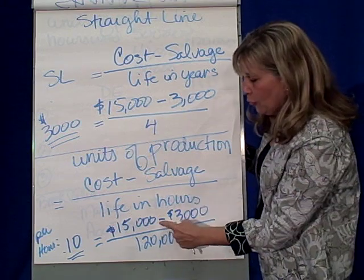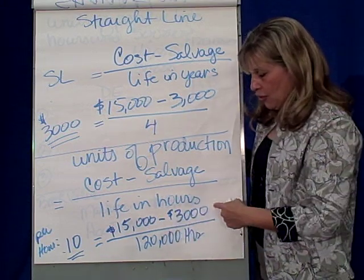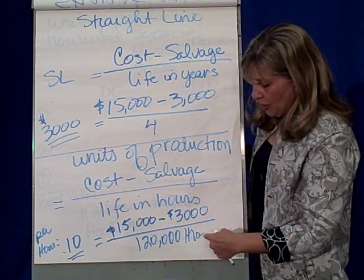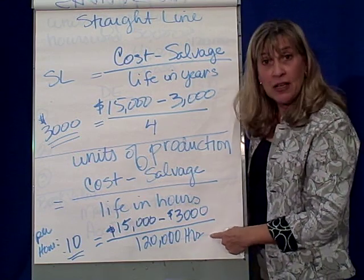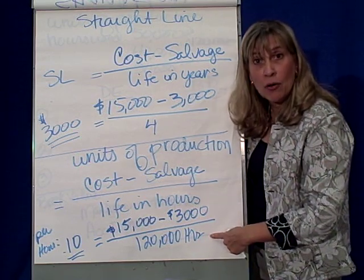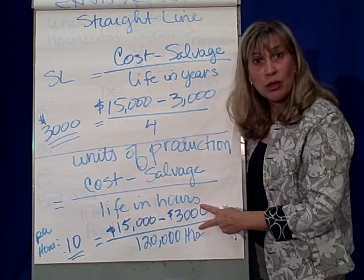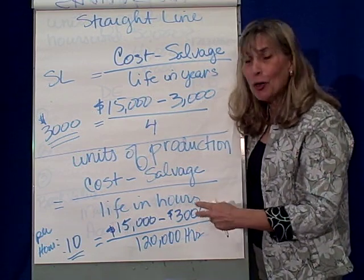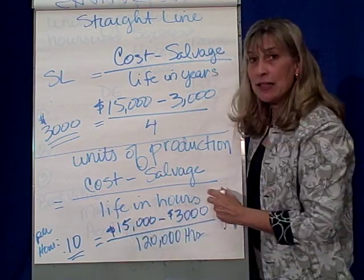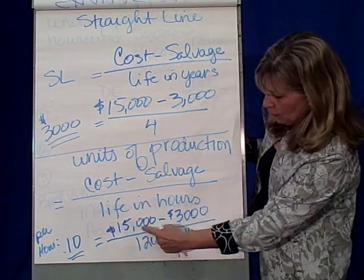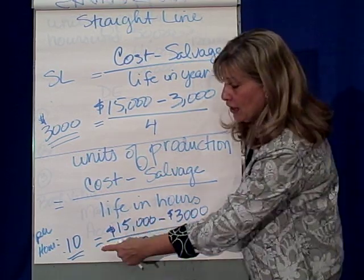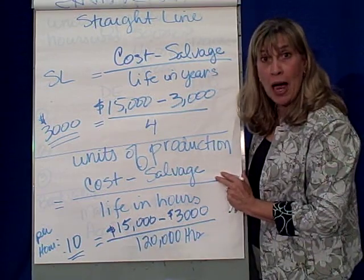The cost was $15,000, the salvage was $3,000, and the life in hours is 120,000 hours. So what is our depreciation per hour, or how much do we use per hour? 10 cents — $12,000 over 120,000 hours is 10 cents per hour.